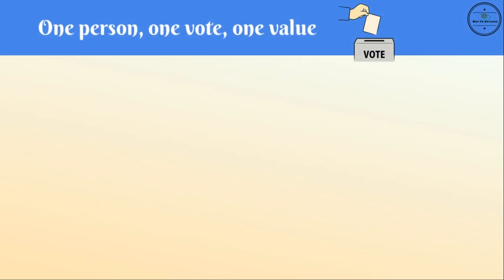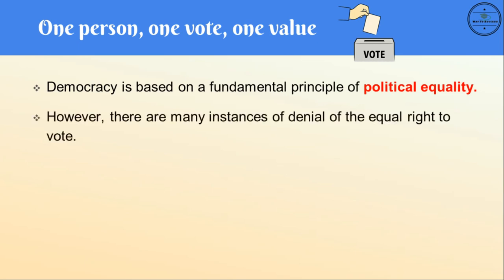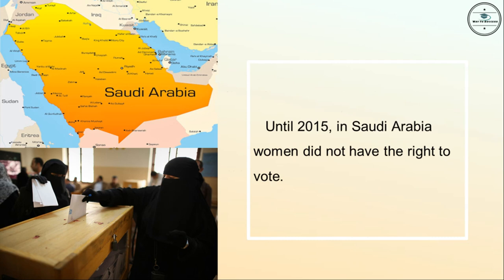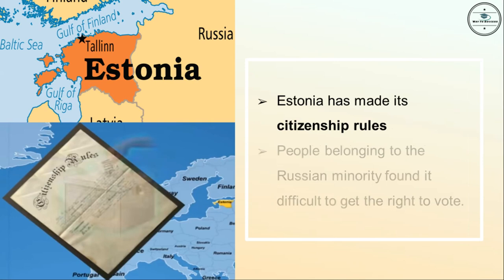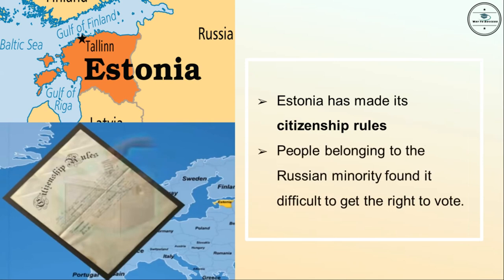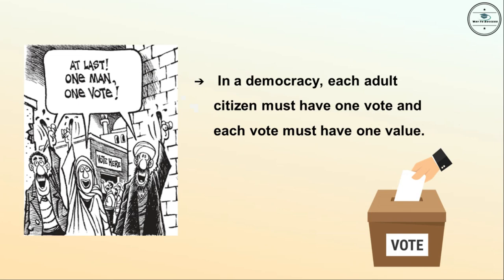The next point is one person, one vote, one value. Democracy is based on a fundamental principle of political equality. However, there are many instances of denial of the equal right to vote. Until 2015, women in Saudi Arabia didn't have the right to vote. Estonia made citizenship rules difficult for people belonging to the Russian minority. In Fiji, the vote of an indigenous Fijian has more value than that of an Indian Fijian. In a democracy, each adult citizen must have one vote and each vote must have one value.